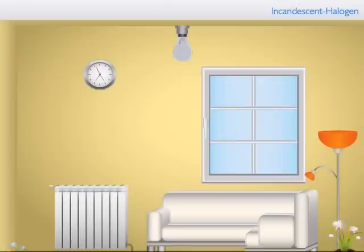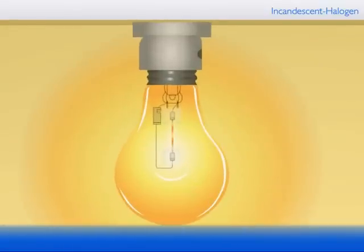Now, we will study about halogen incandescent lamps. In a halogen incandescent lamp, the temperature of the filament is increased to 3000 Kelvin.